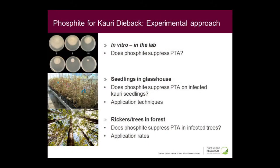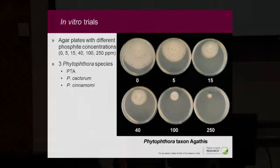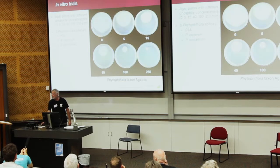Basically what we've got here is increasing concentrations of phosphite in the media — this one didn't have any phosphite, and then gradually increasing concentrations up to 350 parts per million. You can see the effect that has had on the growth of the PTA. We compared it with a couple of other species that are well controlled by phosphite — Phytophthora capsici and Phytophthora cinnamomi — and the PTA seemed to be even more rapidly suppressed than these other species. So that gave us some cause for optimism.